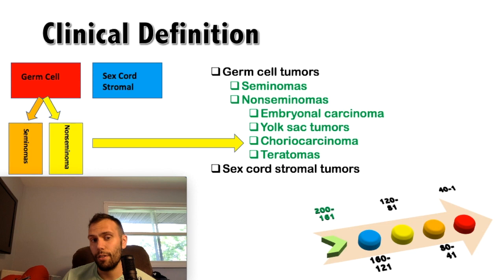The sex cord stromal tumors include two major subtypes: the Leydig cell tumor and the Sertoli cell tumor. These tend to be benign, as mentioned earlier.